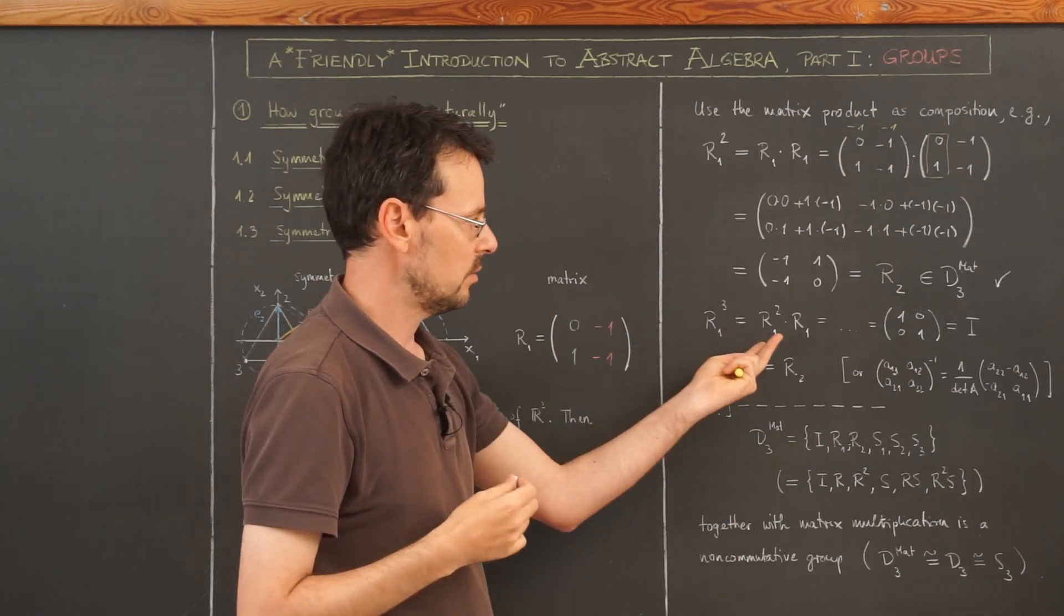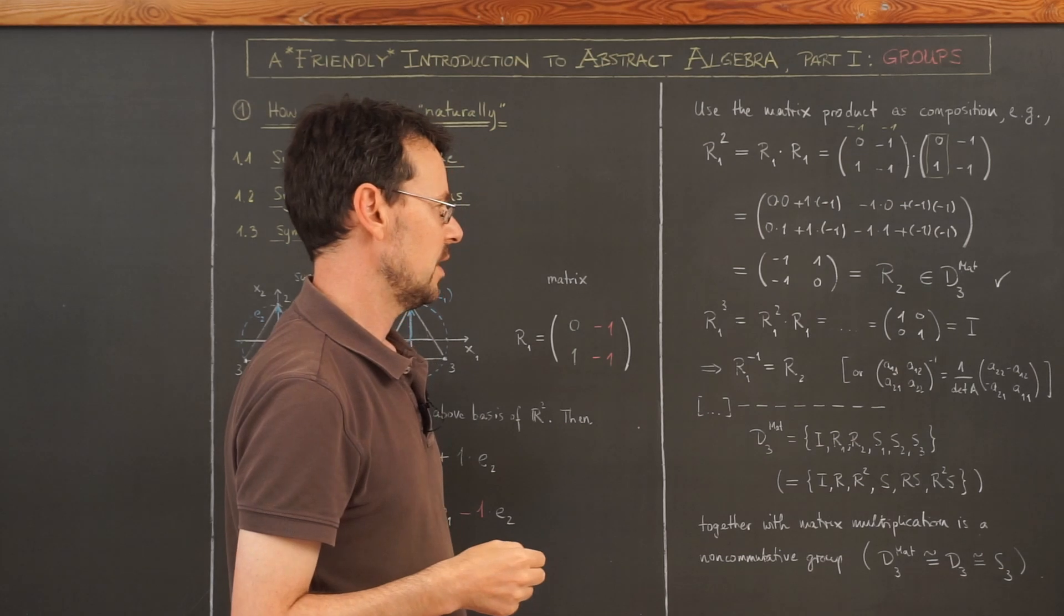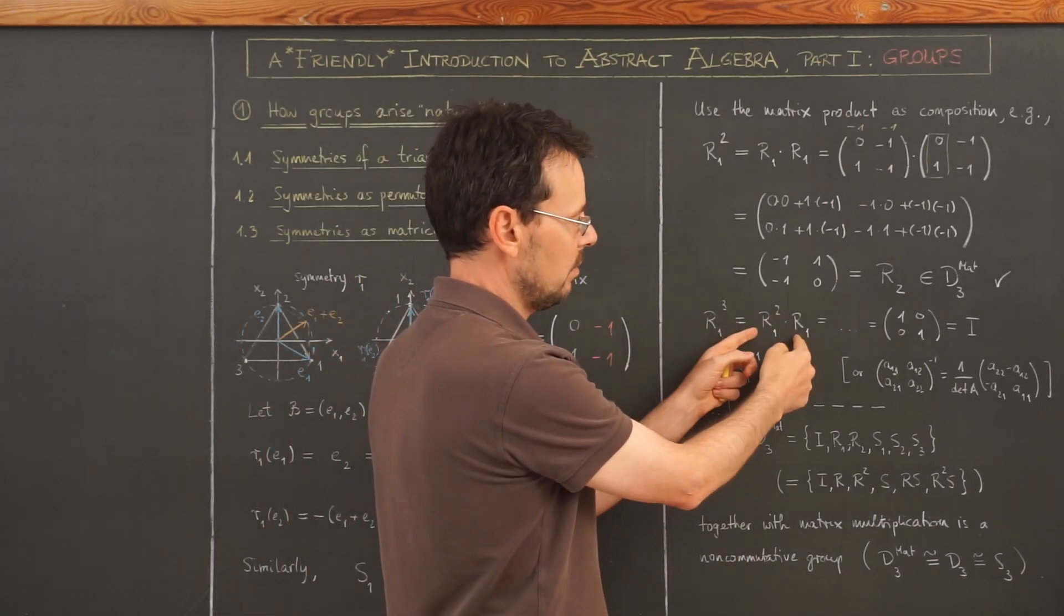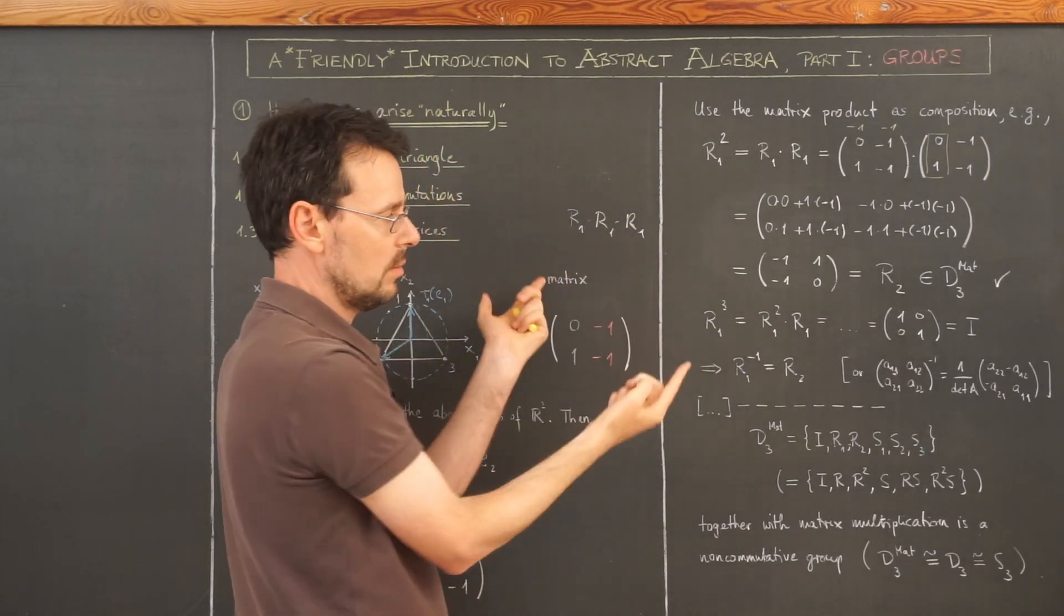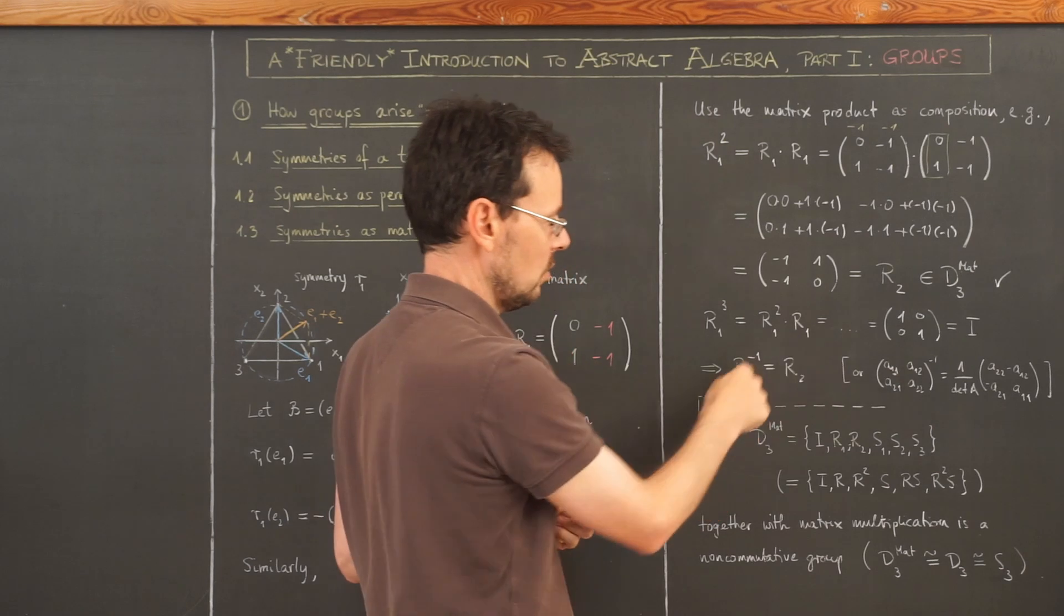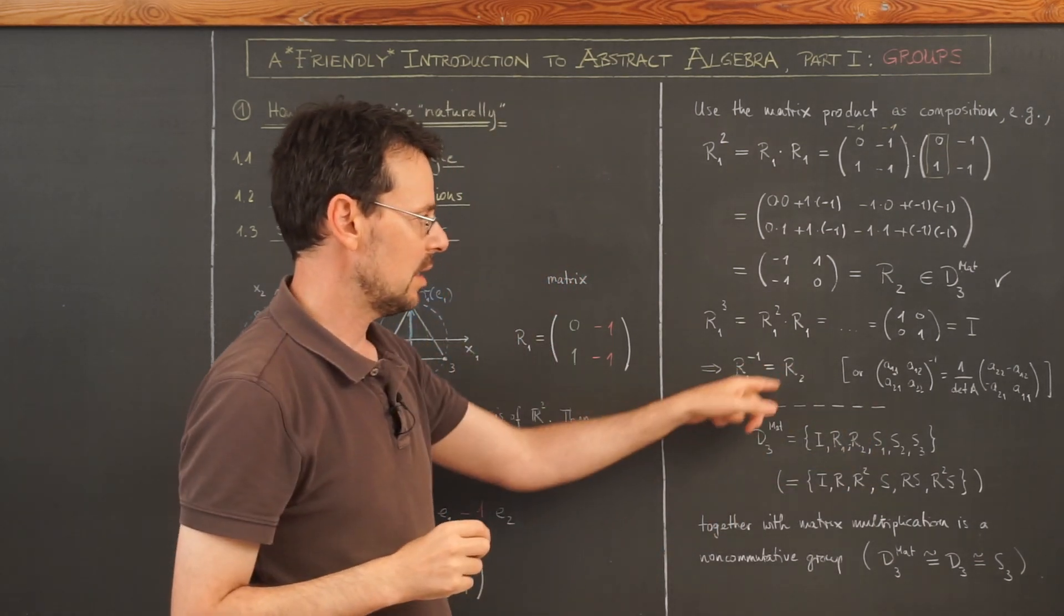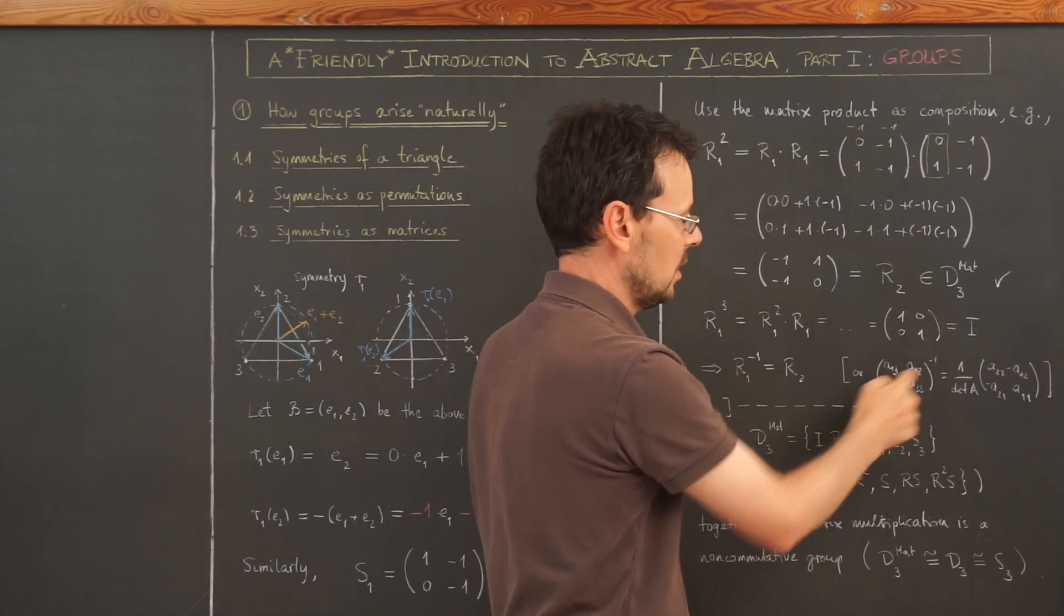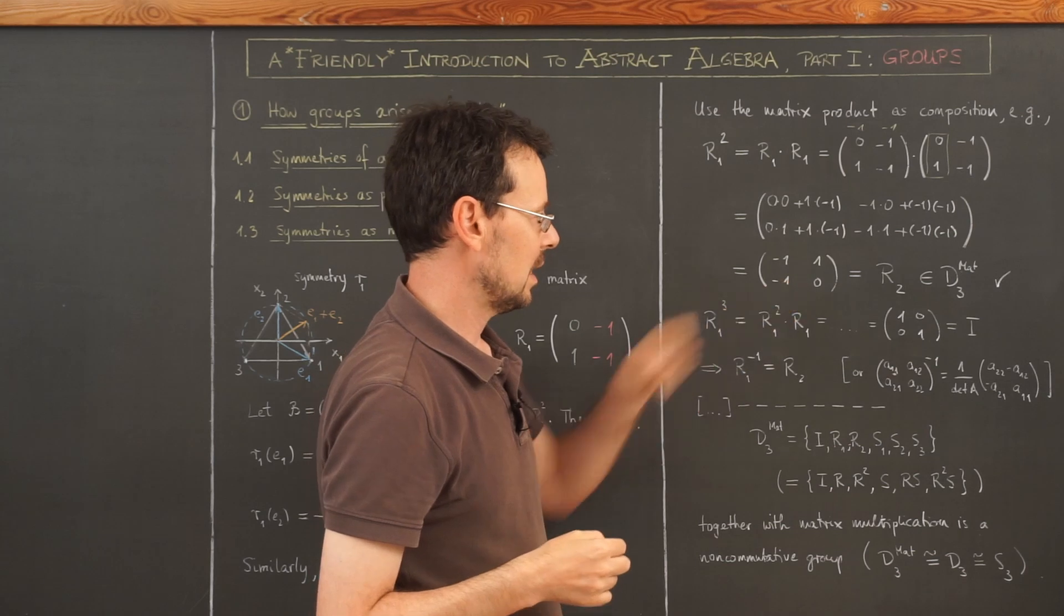If you do not rely on the geometric background, you actually have to check that also the other product, R1 times R1 squared is the identity because the group will turn out to be non-commutative. Actually, here when you multiply the powers, this is not important because here the order is obviously not important if I take the square here or take the square here. So this actually suffices to show that the inverse matrix of this matrix here is again a matrix in the set, namely R2. Or if you know about the formula for the inverse matrix of a 2-by-2 matrix, you can apply this directly and you will end up with the same result that the inverse matrix of this one here is exactly that matrix.